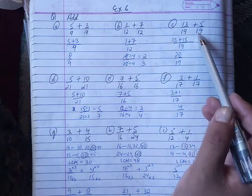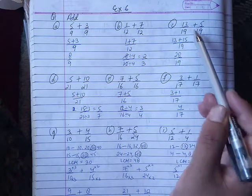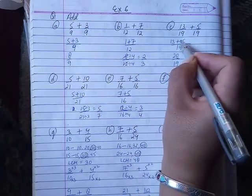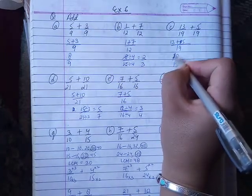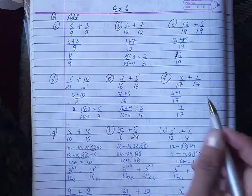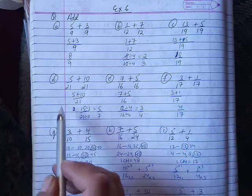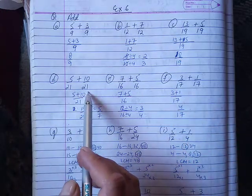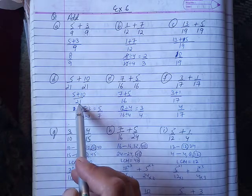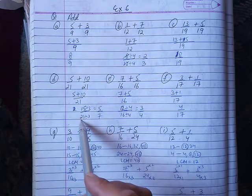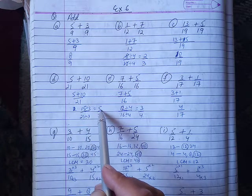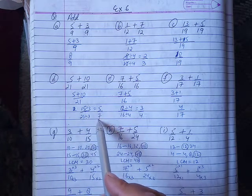This is 5 by 21 and 10 by 21. These are like fractions with denominator 21. The numerator is plus, so we get 15 by 21. Divide by 3: 3 into 15 gives 5, and 3 into 21 gives 7. The answer is 5 by 7.